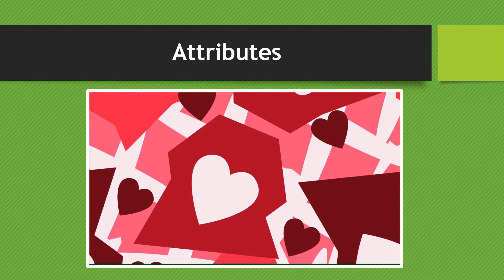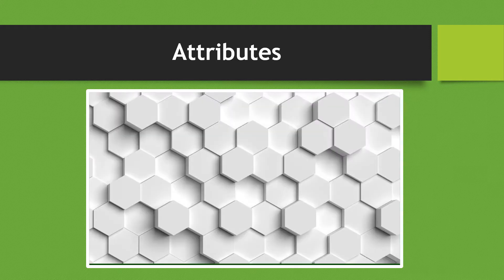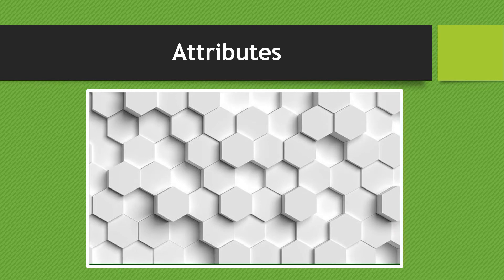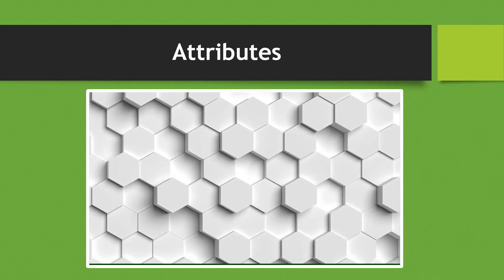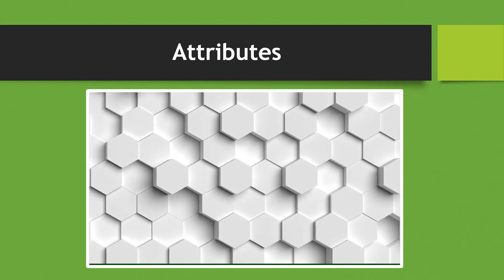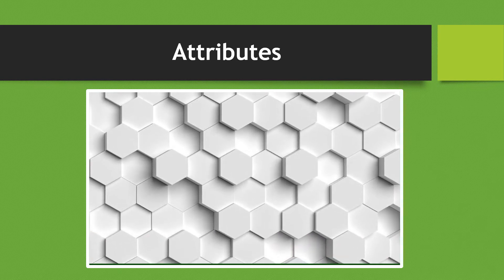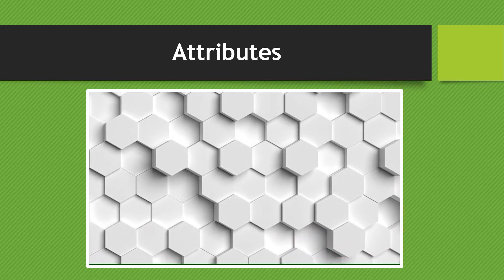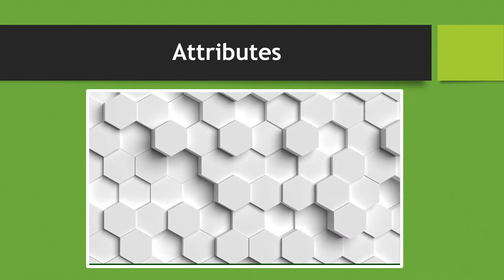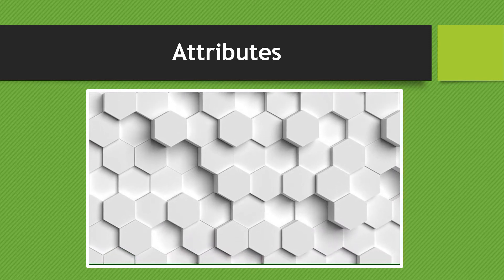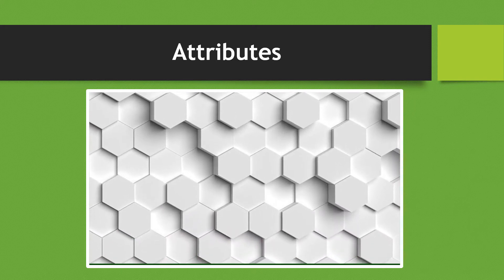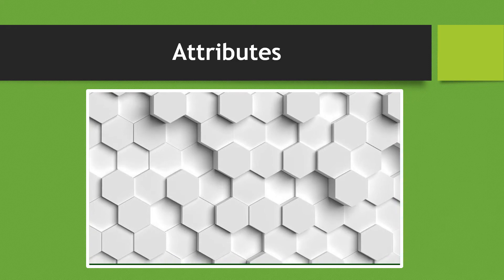Now we take a look at the hexagons. The changing attribute is the thickness. Although all the hexagons are the same size and shape, the thickness of the hexagons is changing. So that's our look at attributes.